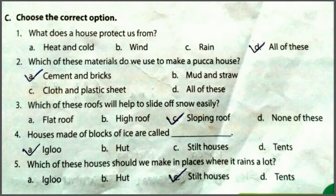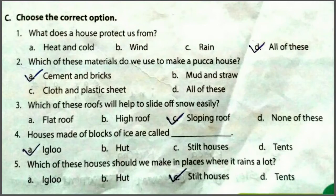Fourth MCQ: houses made of blocks of ice are called — igloo, hut, stilt house or tent? आपको पता ही है जो ice में से बनता है वो house igloo बोलते हैं. So answer is option A — igloo.